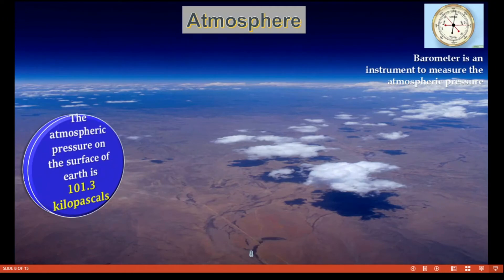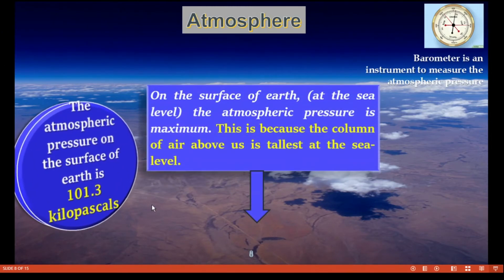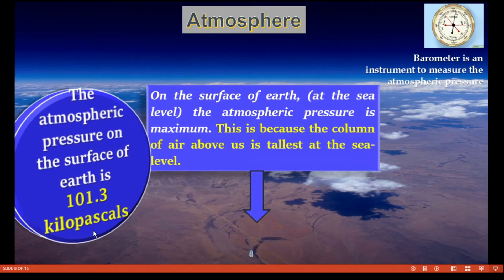Looking at the cross-sectional view of the atmosphere, we can see it has different layers. The atmospheric pressure on the surface of the earth is 101.3 kilopascals. At sea level, the atmospheric pressure is maximum, because the column of air above us is tallest at sea level. One more point: a barometer is the instrument used to measure atmospheric pressure.